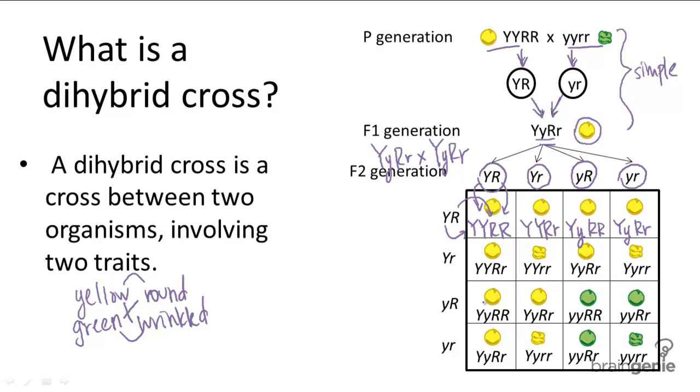And what you notice from this, here's a trick to remember: a heterozygous dihybrid cross will always have a 9 to 3 to 3 to 1 phenotype ratio. The 9 is the yellow round, the 3's are the yellow wrinkled and green round, and the 1 is the green wrinkled.